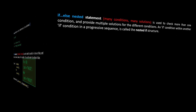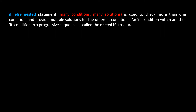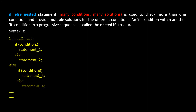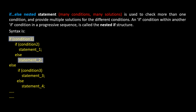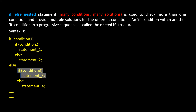The if-else nested statement has many conditions and many solutions. It is used to check more than one condition and provides multiple solutions for the different conditions. An if condition within another if condition in a progressive sequence is called the nested if structure. The syntax is: if condition one is satisfied, then if condition two is satisfied, execute statement one; else execute statement two. If condition one is not satisfied, then if condition three is satisfied, execute statement three; else execute statement four.